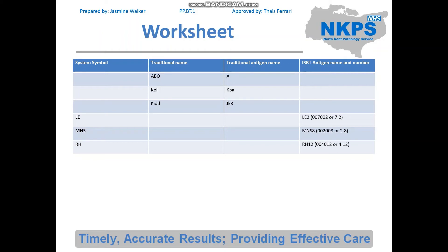This is question one. You can see you get the system symbol, traditional name, traditional antigen name, and ISBT antigen name and number — so this is the basics of antigen names and symbols, not genetics. The first was ABO: system symbol ABO, traditional name ABO, traditional antigen name A, so it's ABO01. The second was Kel — we actually went through this in the examples. The third was Kidd: system symbol JK, traditional antigen JK3, so it's JK3 or 009003.